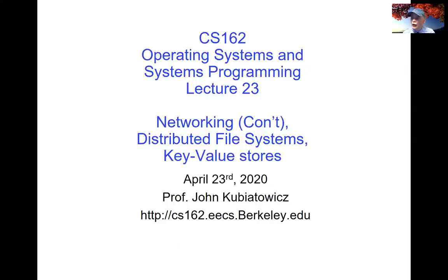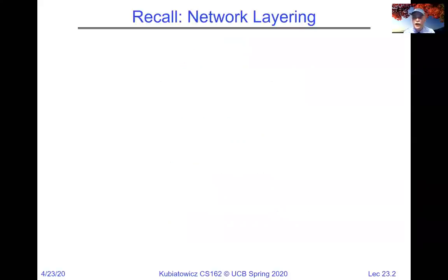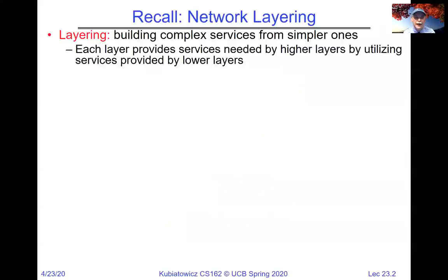Welcome back, everybody. We are going to continue with where we left off last time. We were talking about how to get a networking layer that we can build interesting distributed applications out of. Basically, layering is our technique here. We're going to build complex services out of simpler ones. We started with the IP datagram service, which is a way of getting unreliable messages to route from one point to any other point in the network. From that, we're going to build up something more interesting.